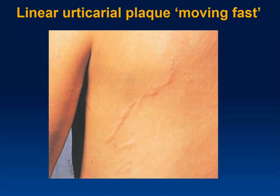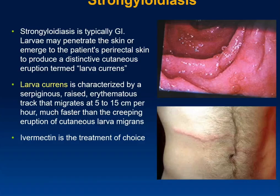A linear urticarial plaque that is fast-moving — that description may appear in a board question. Always remember it is linear, tends to be urticarial, looks like a long hive, and it moves. That is larva currens — this is strongyloidiasis.